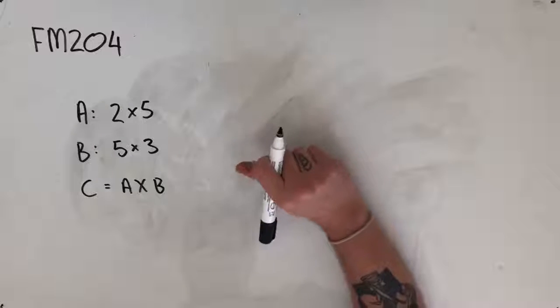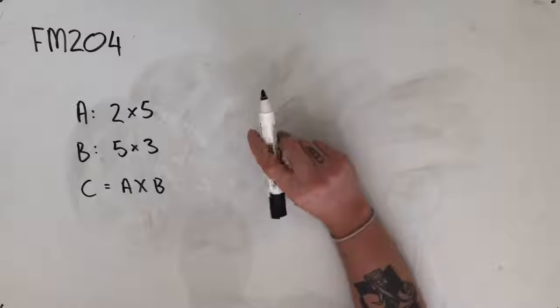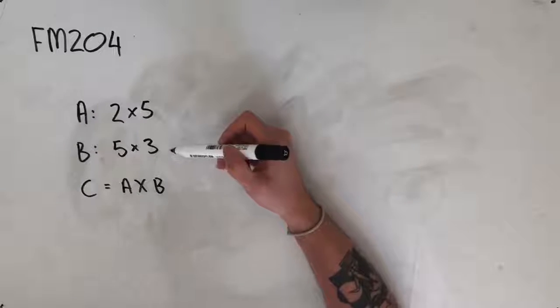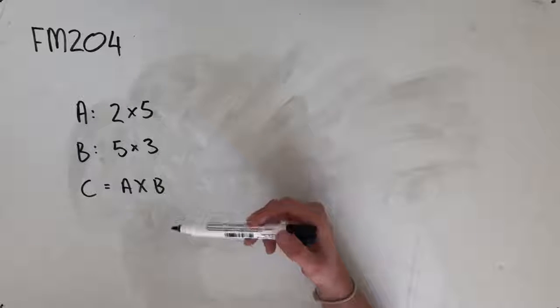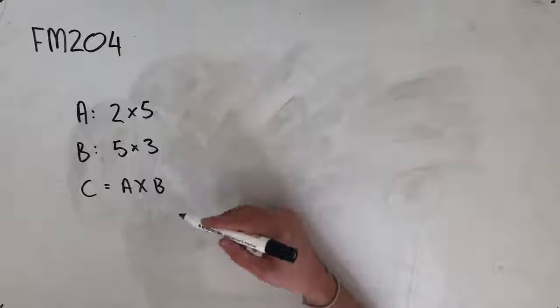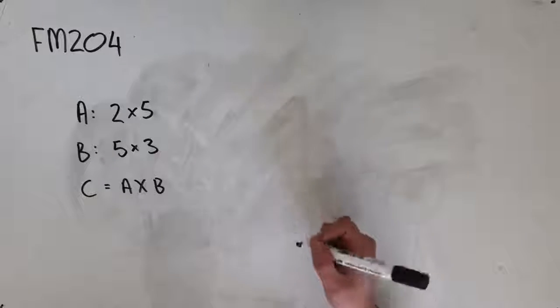Hey guys, welcome to question FM204 of the Further Maths Fortify Study Guide. This question reads, matrix A has two rows and five columns, matrix B has five rows and three columns, and matrix C is equal to A times B. They also want to know matrix C has how many rows and how many columns.